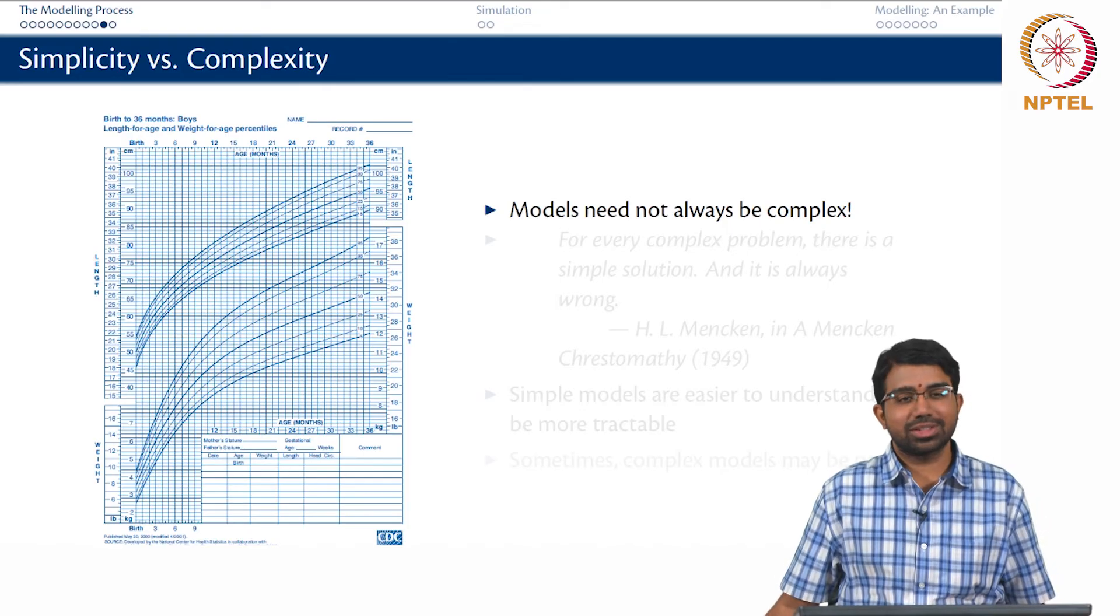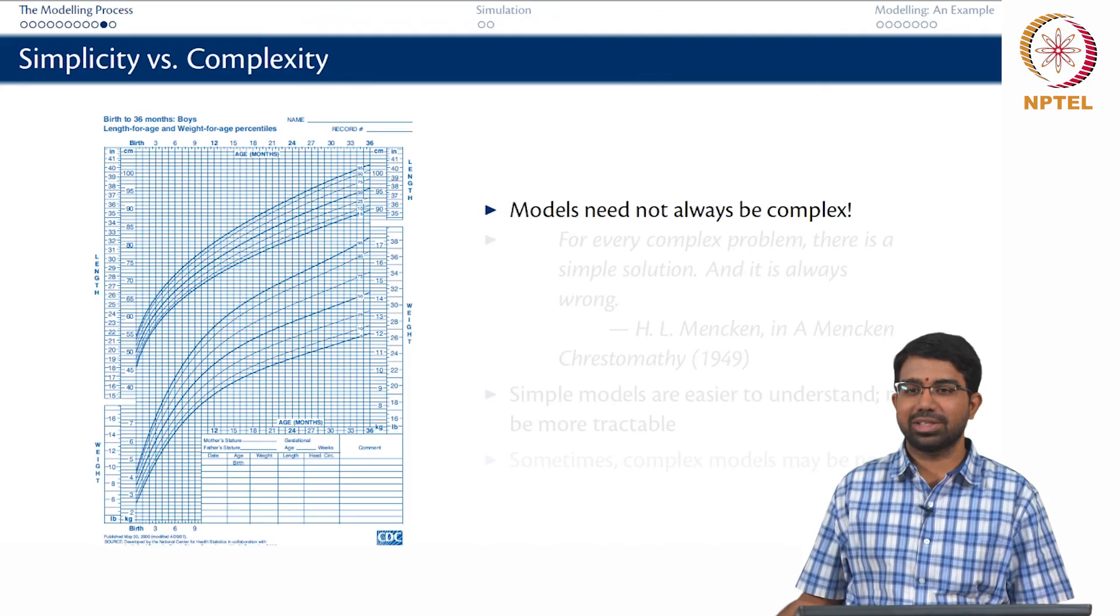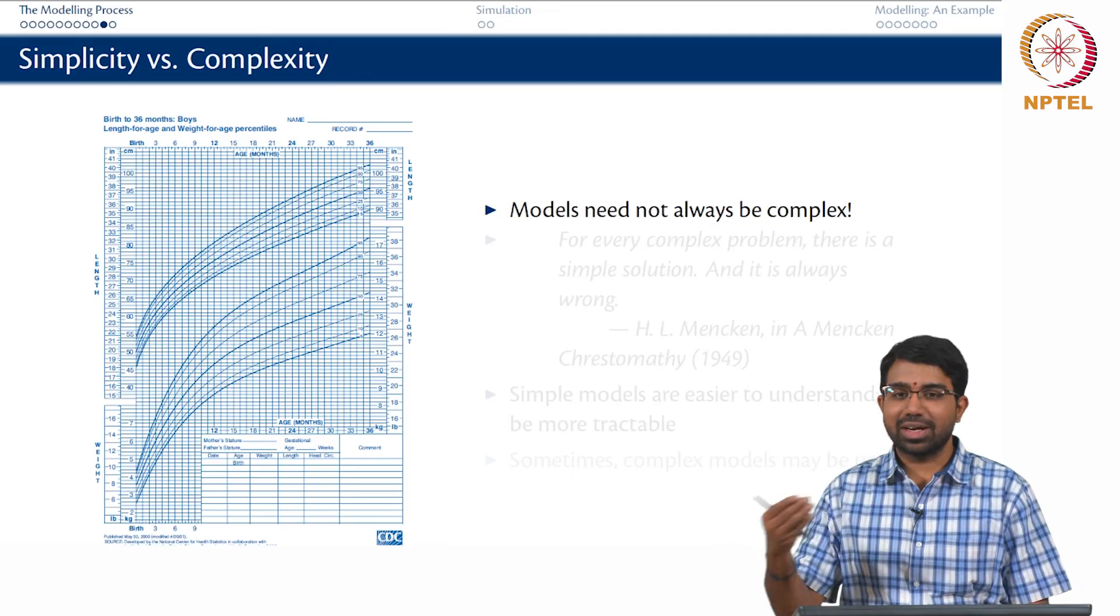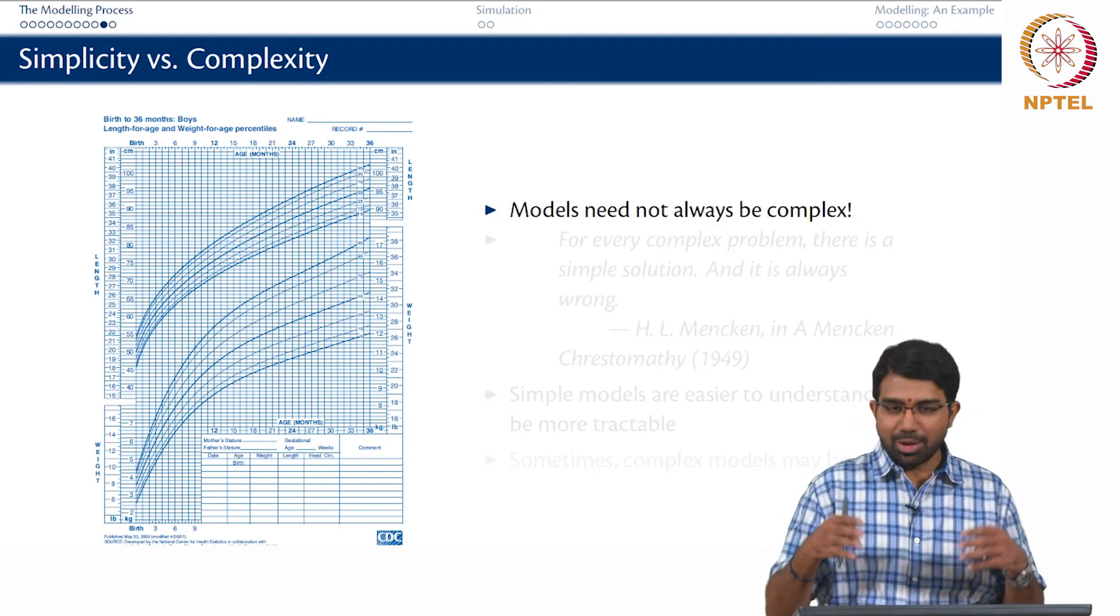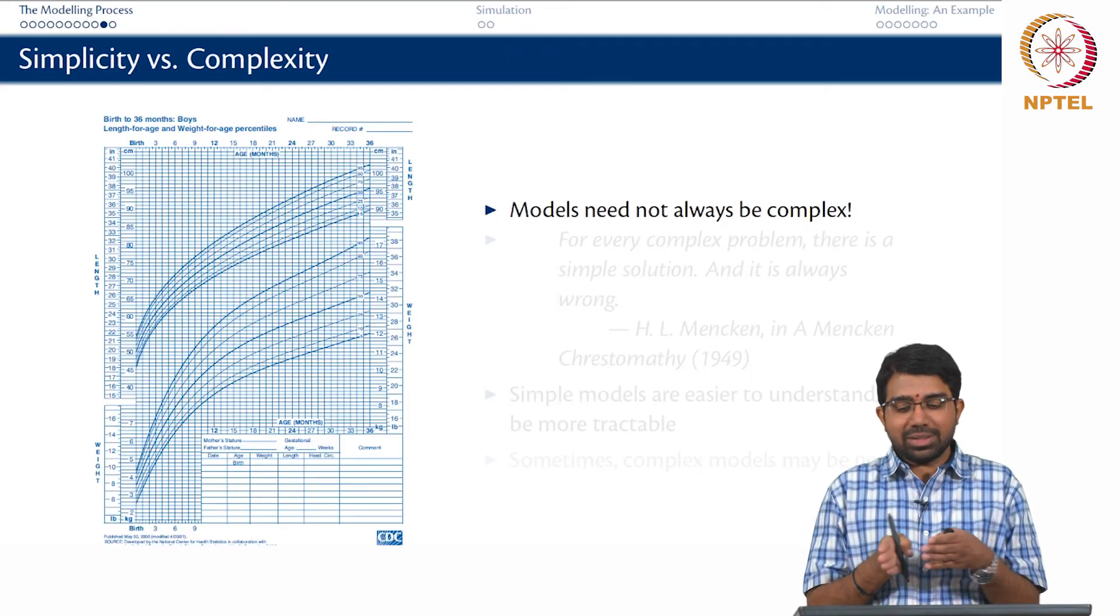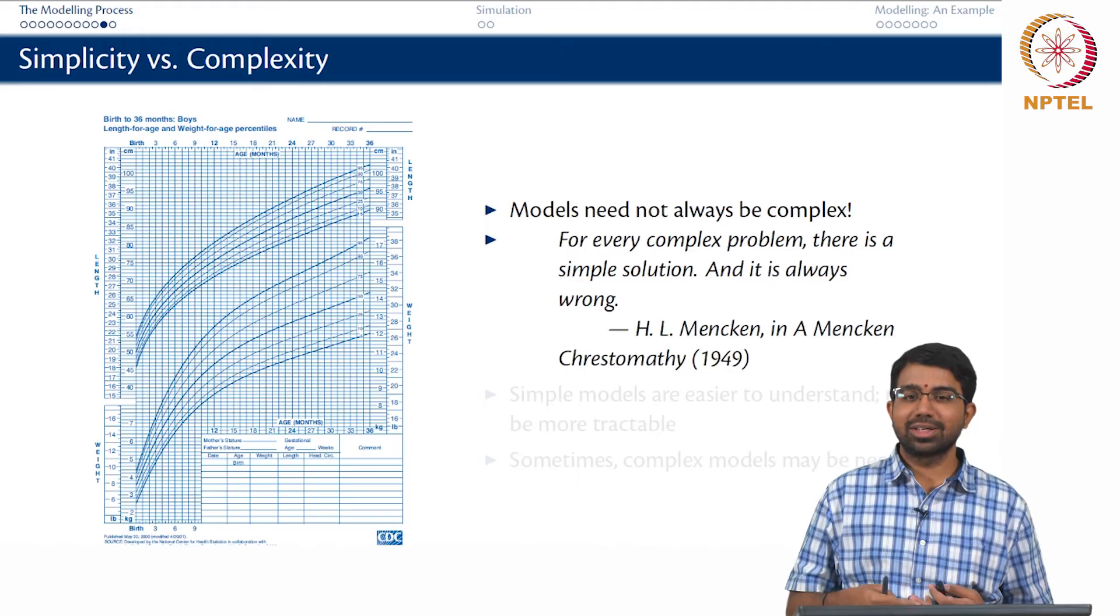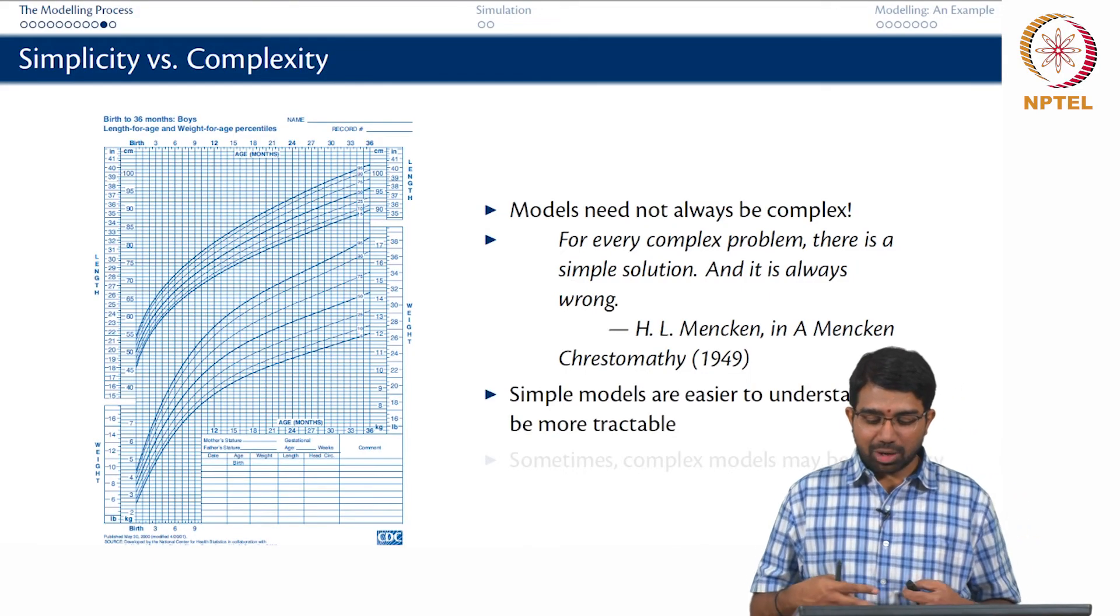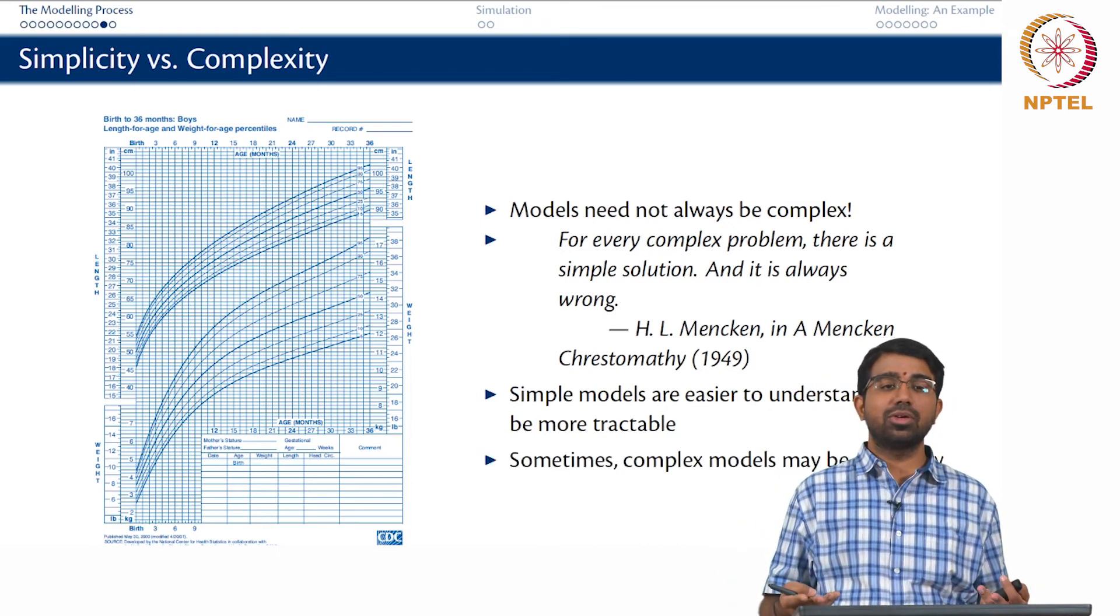I mean, growth is such a complex thing. I know how much food the child takes, how much activity he or she has, what is the genetic makeup, what is the nutrition of the parent. In fact, there are projects that are carefully looking at these as well but beyond all of these, you can build a simplistic model but well the model may not be very useful. It could just be wrong as some people say and simple models are easier to understand and may be more tractable but they may not always be helpful. You may compulsorily need to build more complex models.